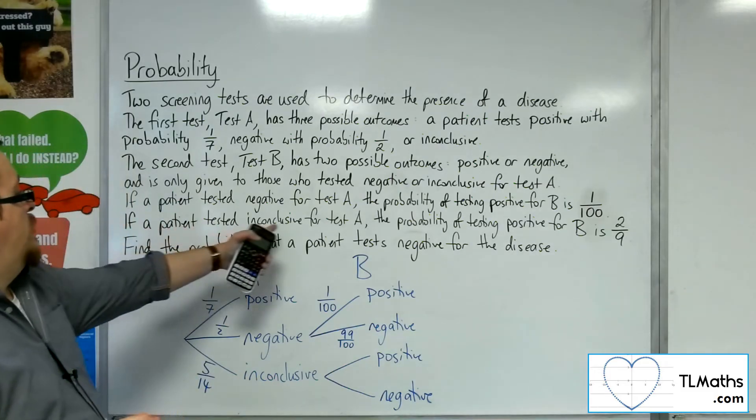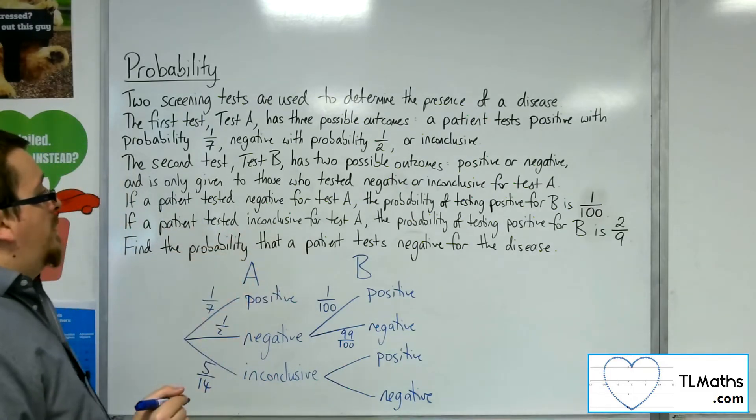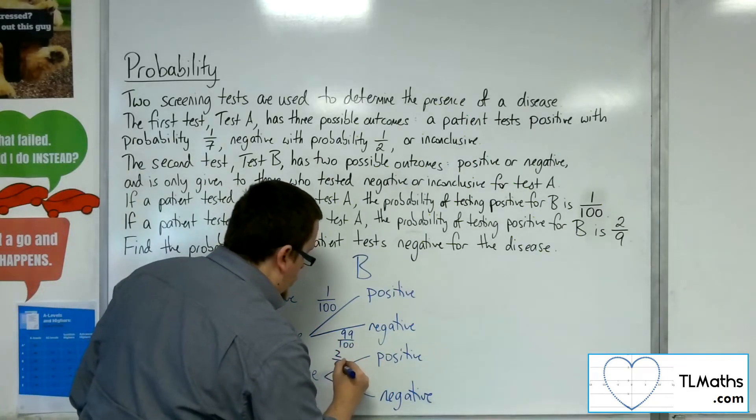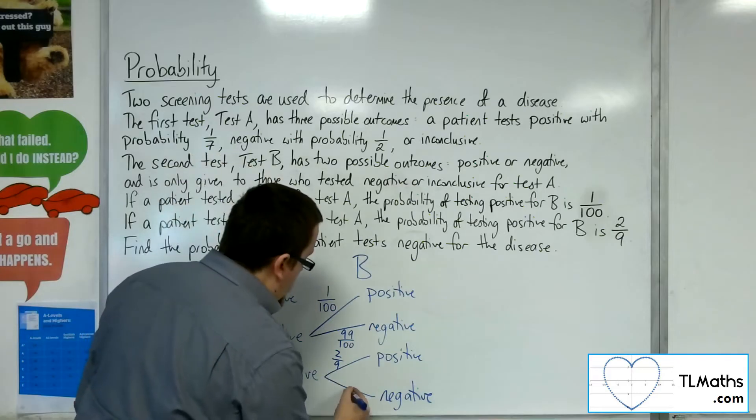If a patient tested inconclusive for test A, the probability of testing positive for B is two-ninths. So, that means the probability of testing negative must be seven-ninths.